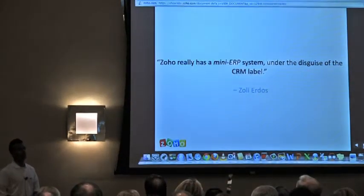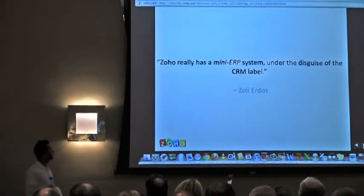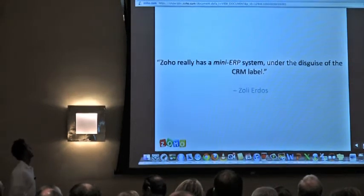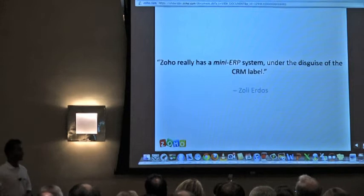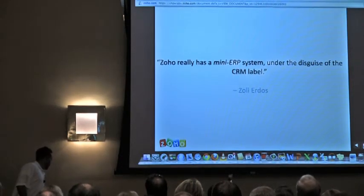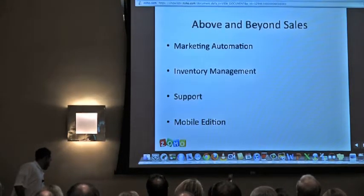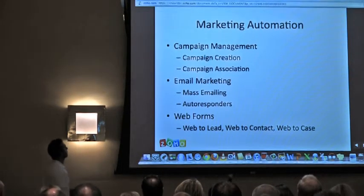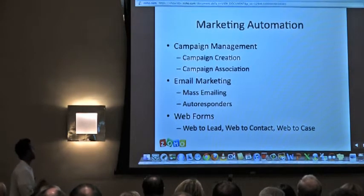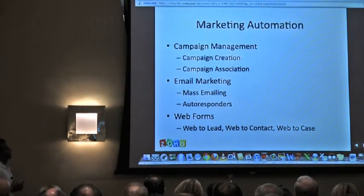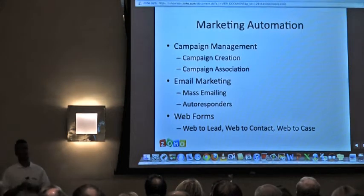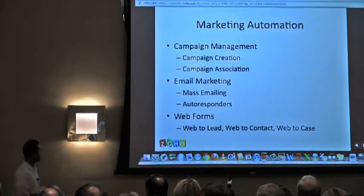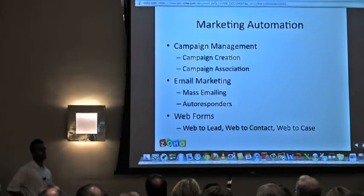There's a quote from one of our bloggers saying Zoho really has a mini ERP system under the disguise of the CRM label — referring to the marketing, inventory, and ticketing system built into Zoho. Here's our outline: we're going to begin with marketing, covering campaign management, how to create and associate campaigns, mass emailing, autoresponders — which are only in the enterprise edition — and then web forms. Who here is using the built-in web forms inside Zoho? Who wants to use them?